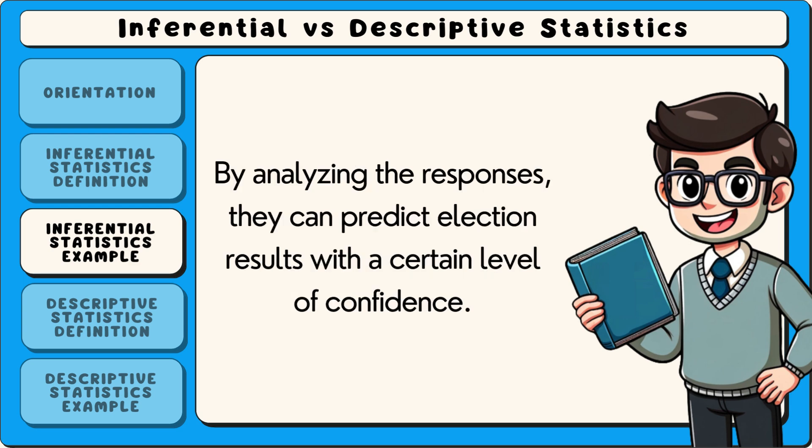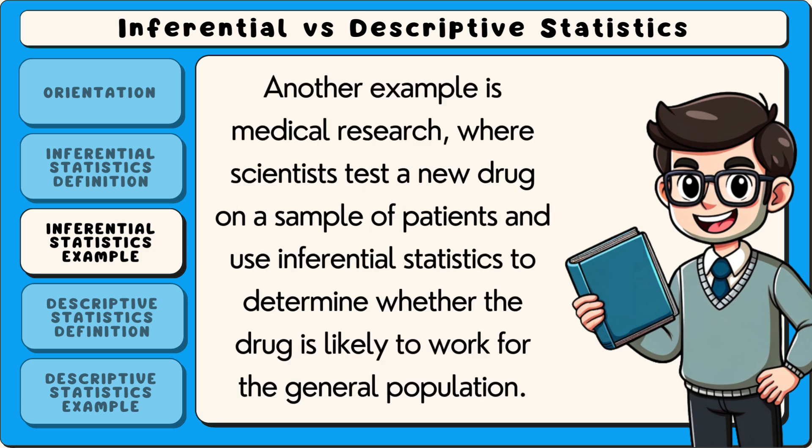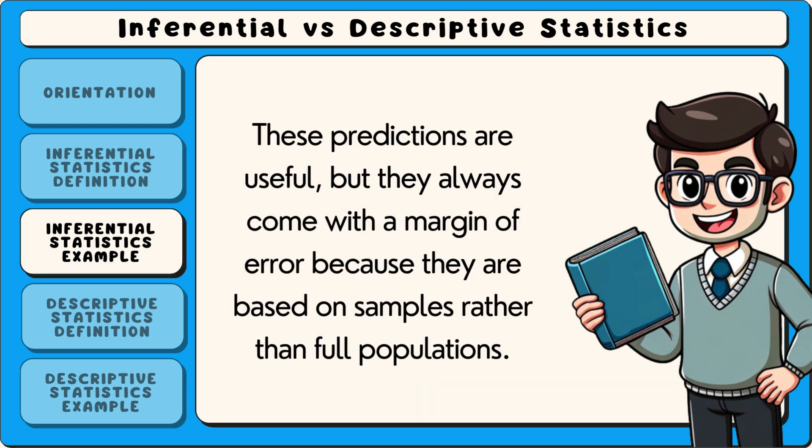By analysing the responses, they can predict election results with a certain level of confidence. Another example is medical research, where scientists test a new drug on a sample of patients and use inferential statistics to determine whether the drug is likely to work for the general population. These predictions are useful but they always come with a margin of error because they are based on samples rather than full populations.